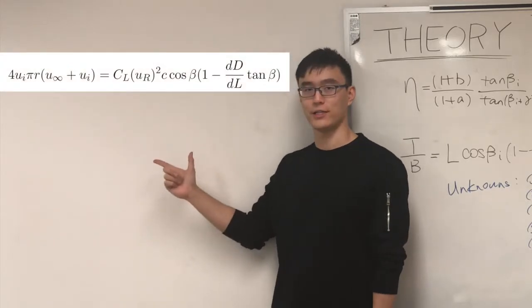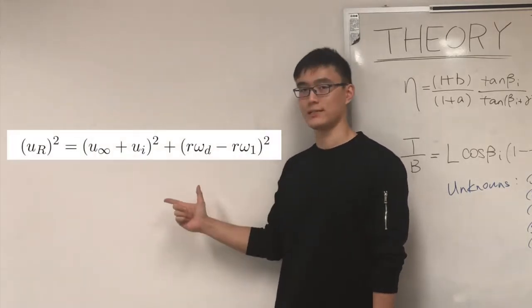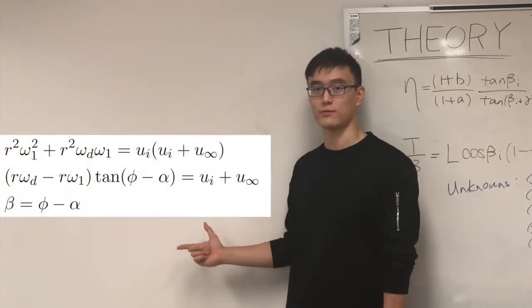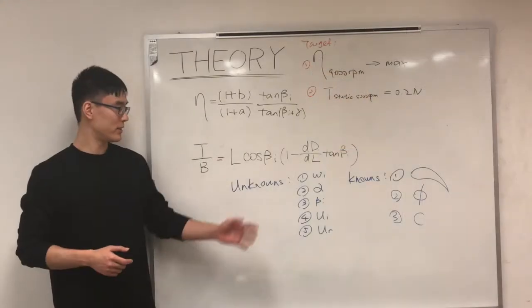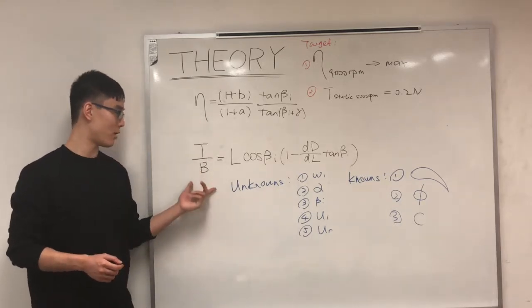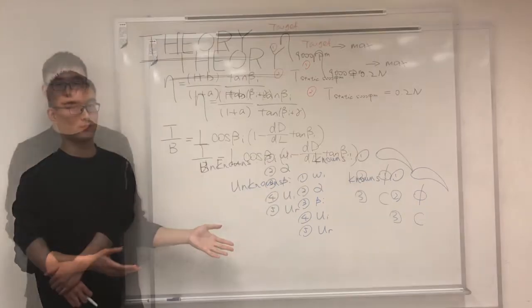The first one is energy conservation. The second one is momentum conservation. And these three come from the geometry of the velocity triangle. With all these unknowns solved by numerical method, we can calculate our efficiency and our thrust at our desired conditions. Any questions?